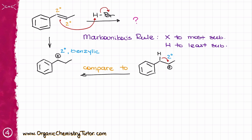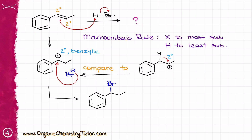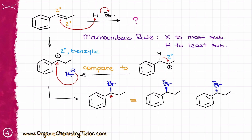From here, I'm going to do the nucleophilic attack by Br⁻, which is going to give me the final product. I also want to point out that this molecule is chiral — I do have a chiral atom over here — which means that in reality we are going to get a racemic mixture, where I have one molecule with bromine looking at me, and another molecule with bromine looking away from me.